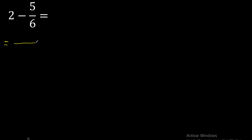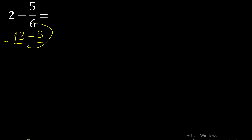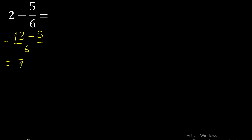First multiply: 6 multiplied by 2 is 12, then minus here — 12 minus 5 is 7.